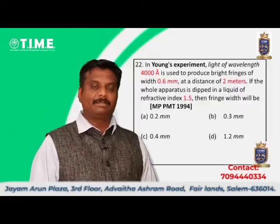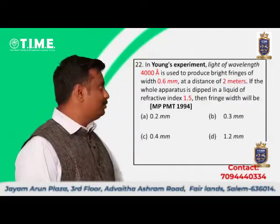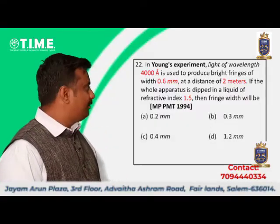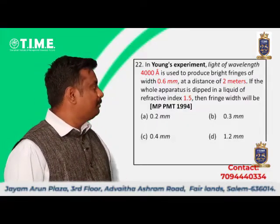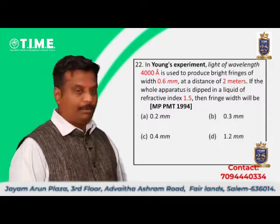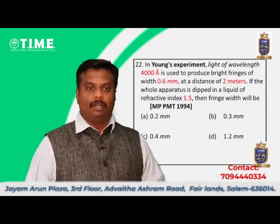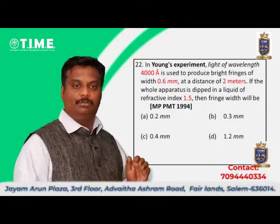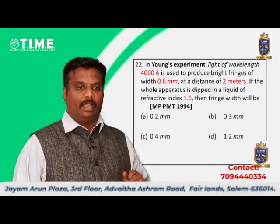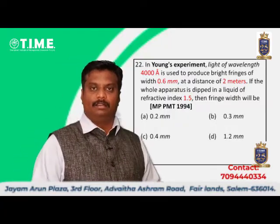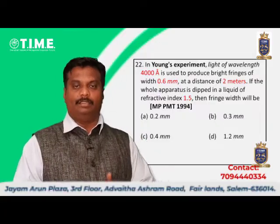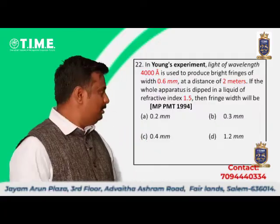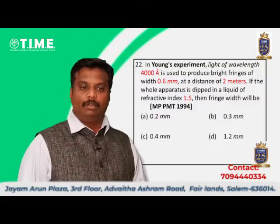In a Young's double slit experiment, light of wavelength 4000 Angstroms is used. Fringes are produced and the width of a bright fringe is 0.6 mm. The distance between the screen and the source is 2 meters. If the entire apparatus is dipped in a liquid of refractive index 1.5, what will be the new fringe width?